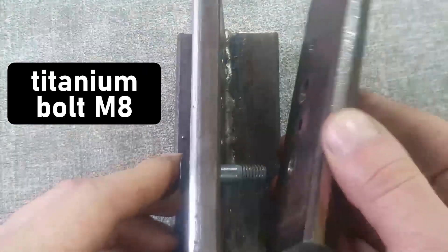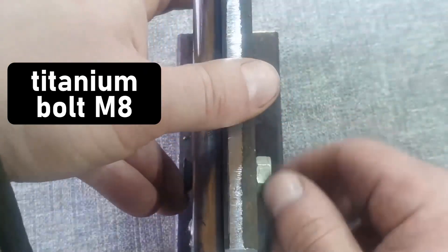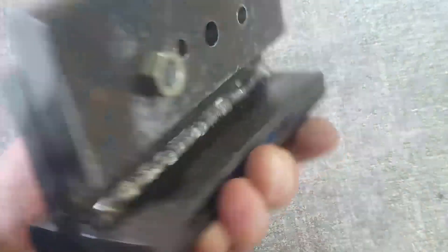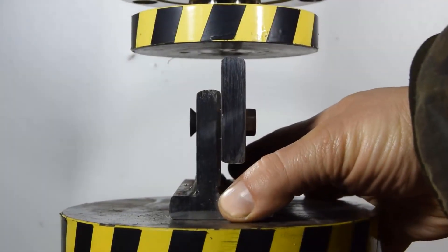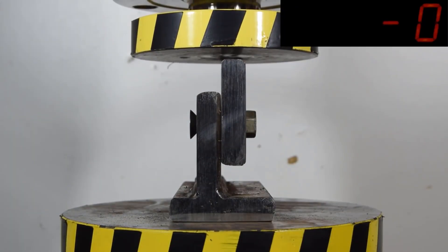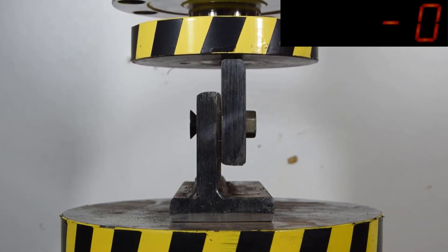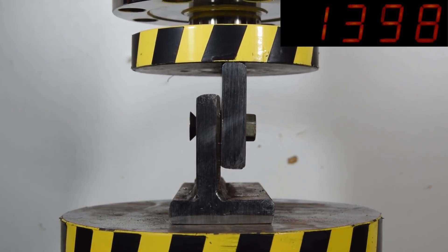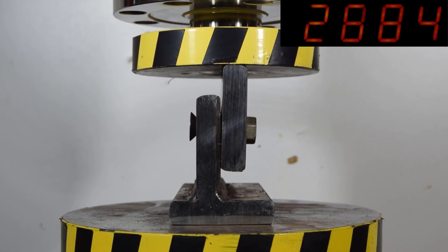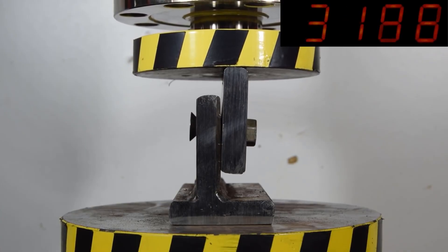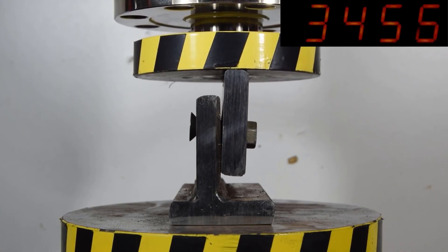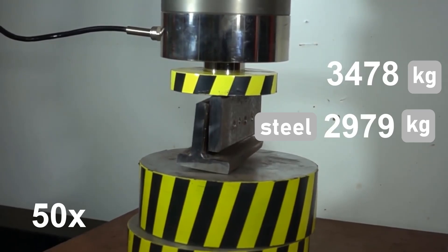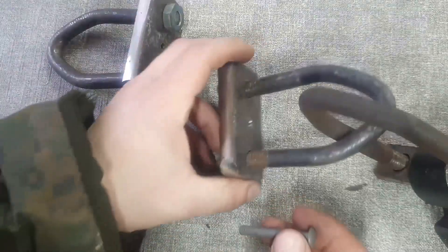What load will the titanium bolt of the same diameter with M8 thread withstand? The titanium M8 bolt withstood shearing of 3.5 tons, 500 kg more than the equivalent steel bolt.